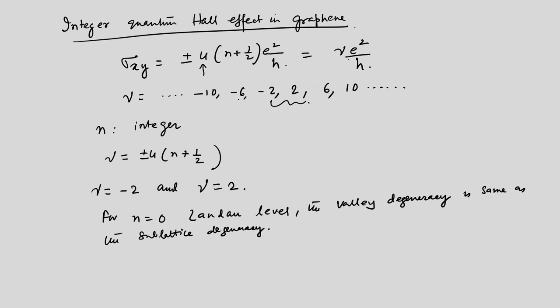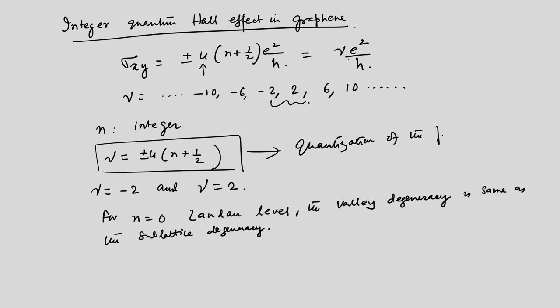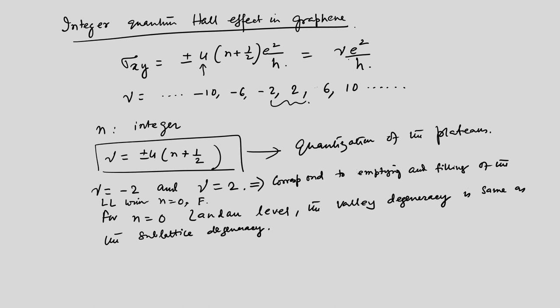These ν values dictate the quantization of the plateaus, where n corresponds to the Landau level index and ν = ±4(n + ½) gives the quantization. This is the quantum Hall effect in graphene, and it has been confirmed experimentally from the plateau positions.